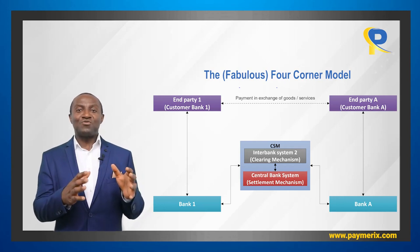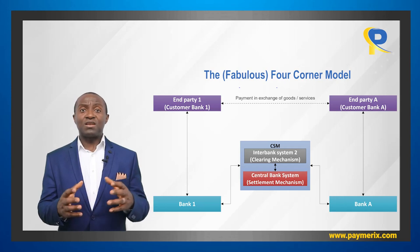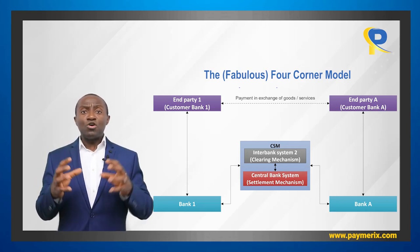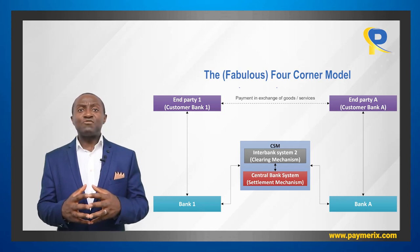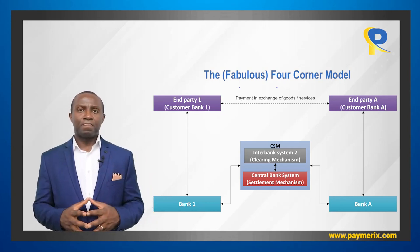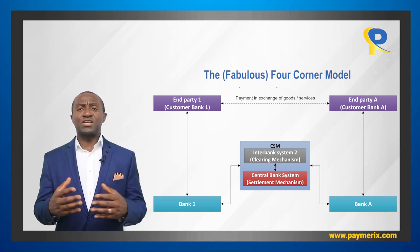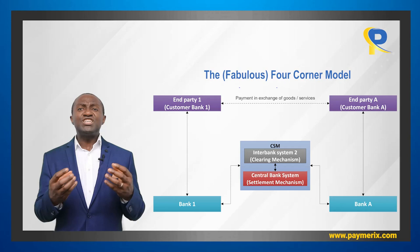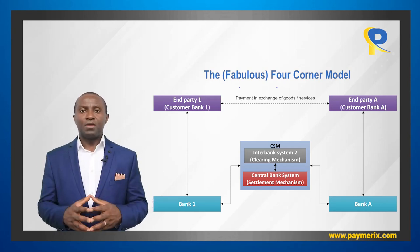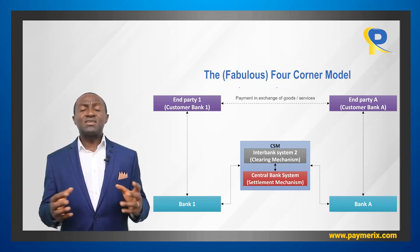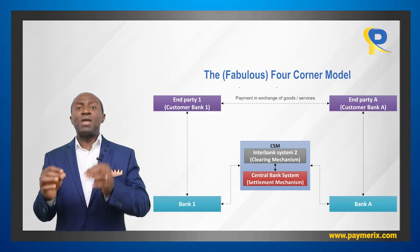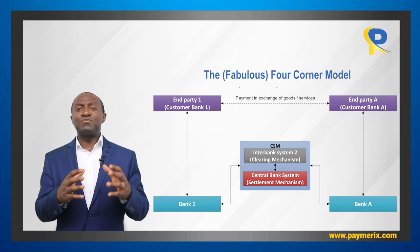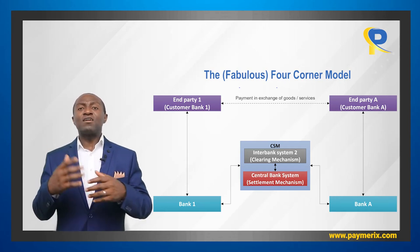We still see that each bank is connected to an end party. Both Bank 1 and Bank A are connected to interbank system 2 and to the central bank system. We have put interbank system 2 and the central bank system in one box that we call CSM — CSM stands for clearing and settlement mechanism. This abstraction is very useful because in general we study one payment instrument at a time, so we only need the interbank system for the instrument we are studying.